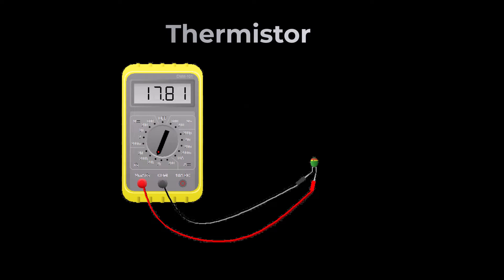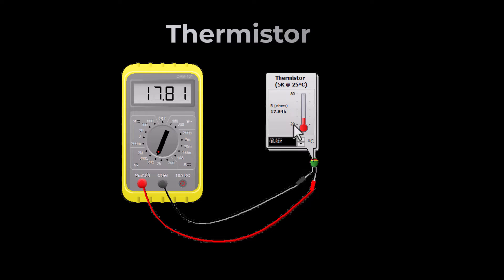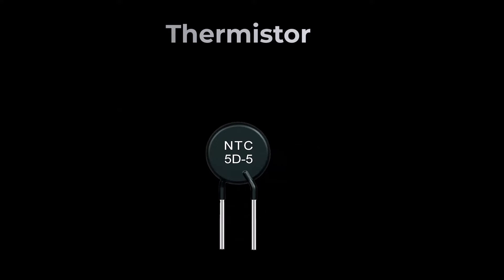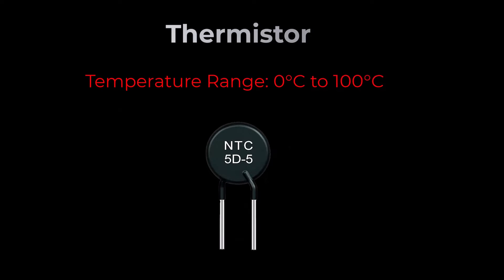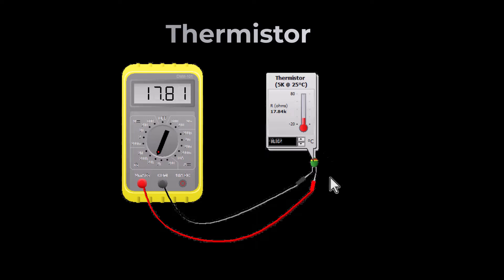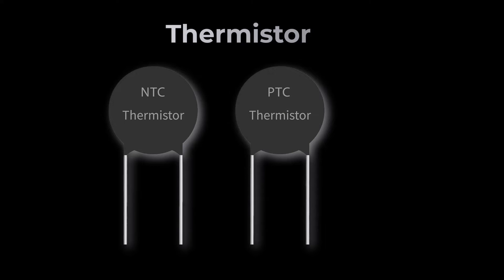Next, the thermistor — small yet mighty, with significant resistance changes. They find their home in medical devices and climate control systems. A thermistor, short for thermal resistor, is a type of temperature sensor that exhibits a significant change in electrical resistance with a change in temperature. Thermistors are known for their sensitivity. The working temperature range for most thermistors is between zero and 100 degrees Celsius. Their resistance changes dramatically with temperature, which distinguishes them from RTDs and thermocouples.